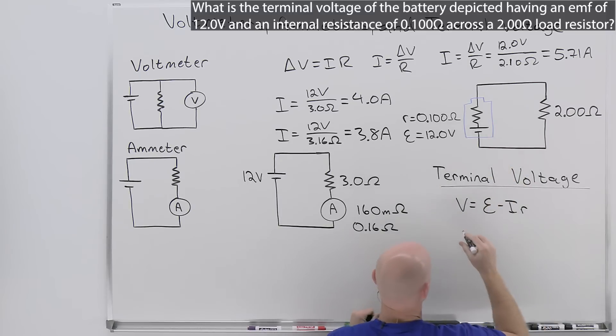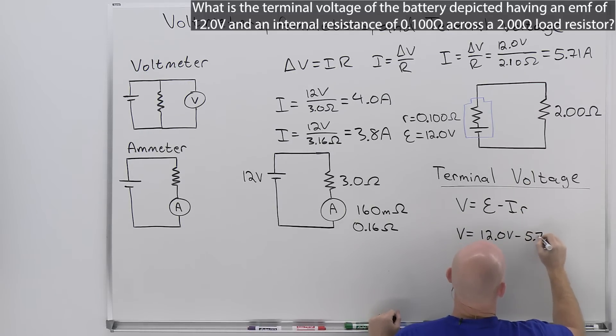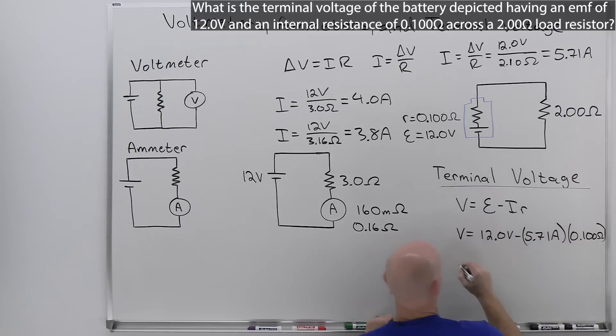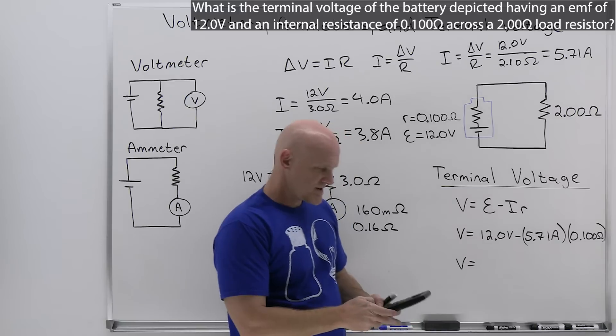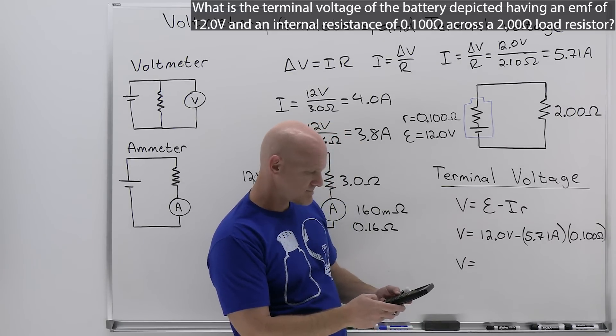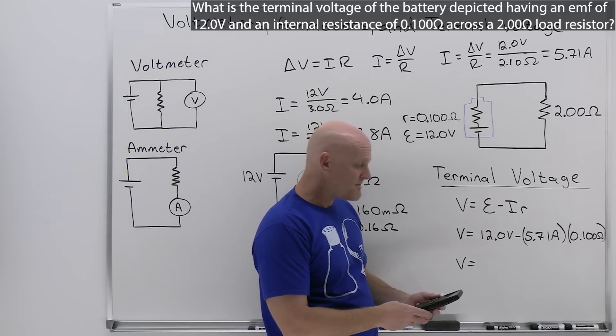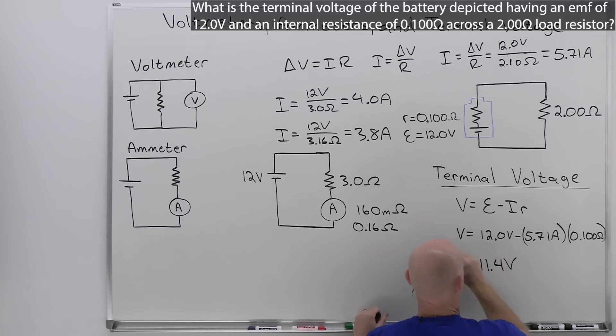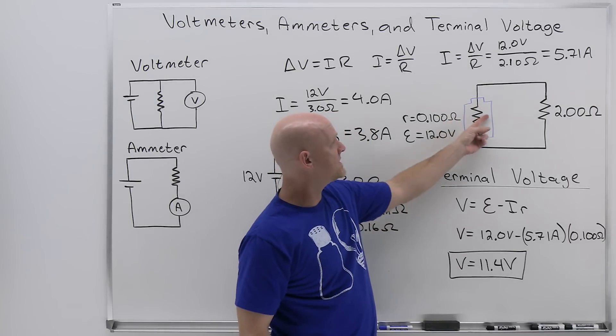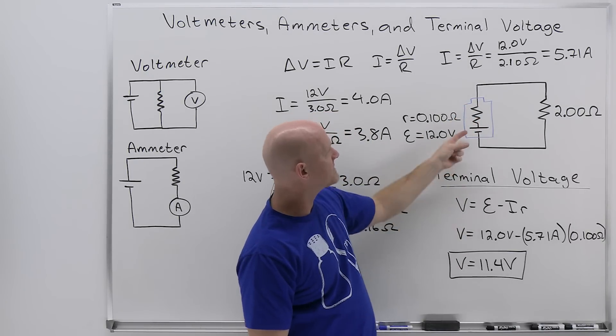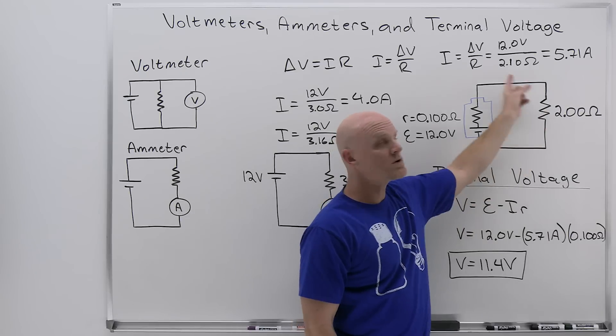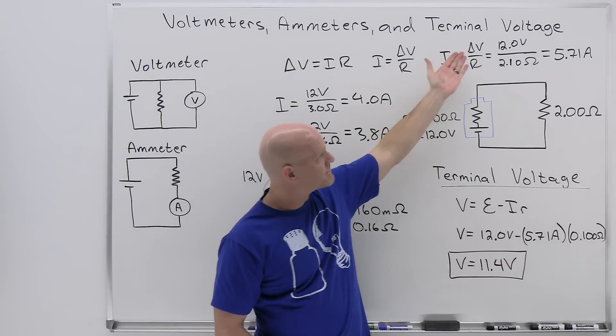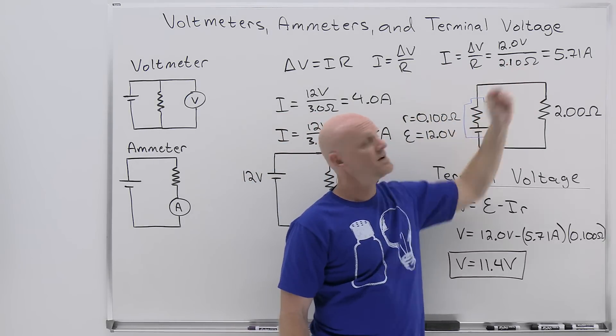We already calculated the current. Had we not, we'd have to do that at this point. But we'll need it for this calculation. We'll take the 12.0 volts minus now the 5.71 amps times that internal resistance of 0.100 ohms. In this case, we'll take 12 minus that previous answer I had times 0.1. Now we're going to get 11.43 volts, which rounded to three sig figs would be 11.4 volts. That's our terminal voltage. If you notice, we're losing 0.6 volts, there's a 0.6 volt drop right here. So we have to subtract that off from the 12 volt EMF to see that it's only going to be an 11.4 volt drop on the load, accounting for the fact that we don't have a six amp current, it's now only going to be 5.71 amps instead.